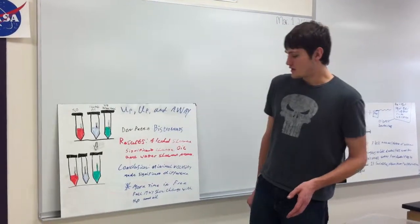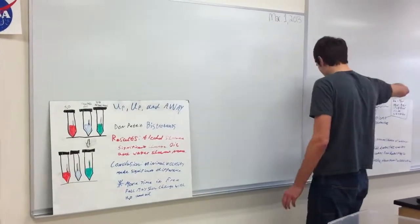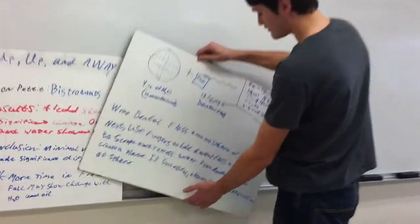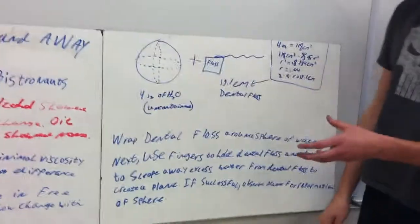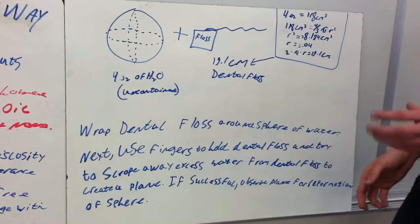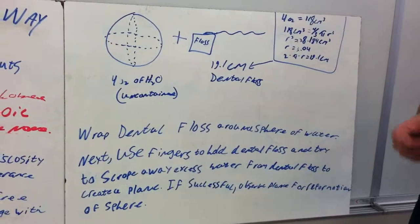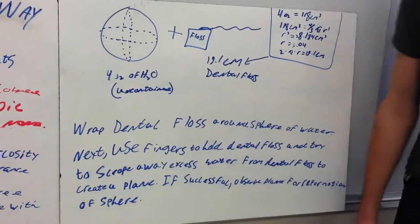So then, for my ISS experiment that I figured would be interesting, was to take four ounces of water and have it uncontained in a free-floating environment. And you take 19.1 centimeters of dental floss, and you wrap this around this sphere of water. This here is the math to find that circumference.